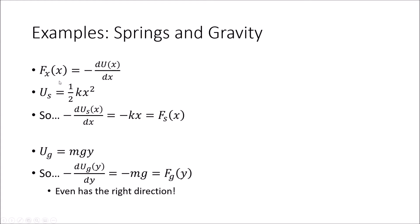We've got the spring potential being one-half kx². We can plug in one-half kx² for U(x). The derivative of one-half kx²: the squared comes down, giving two over two, or just one, so we get kx. The derivative of the spring potential is just kx, but we need to remember that negative sign, so we get negative kx. Negative kx is exactly Hooke's law — the force of a spring equals negative kx.